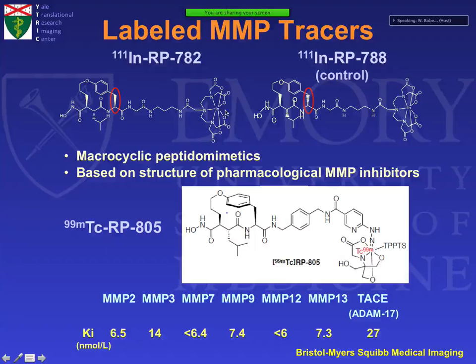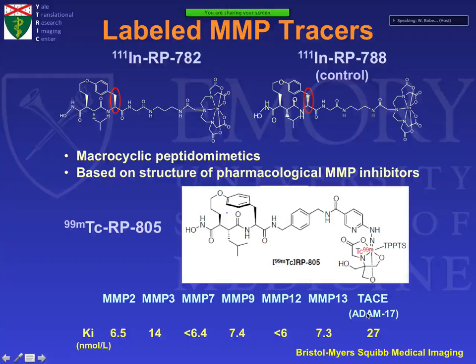The early probes were indium-labeled, and these are radiolabeled MMP inhibitors that bind to the active catalytic domain of MMPs, providing an in vivo index of the balance of MMP and TIMPs. More recently we've been using a technetium-labeled compound called RP805, a broad-spectrum MMP inhibitor with nanomolar affinity across MMP-2, 3, 7, 9, 12, 13, and some TACE agents — all shown to be involved in post-infarct remodeling.